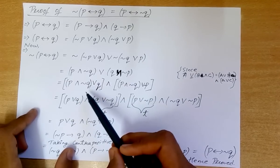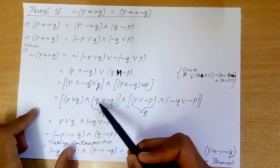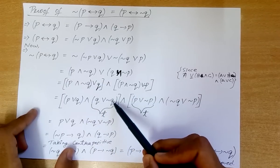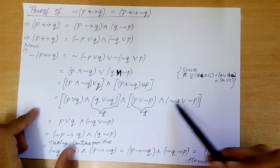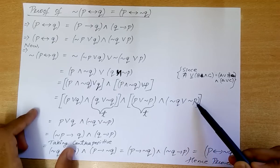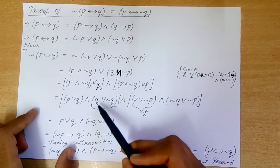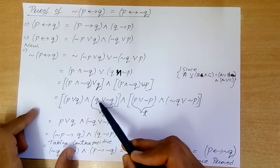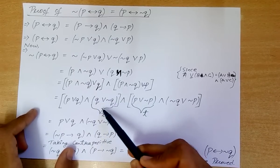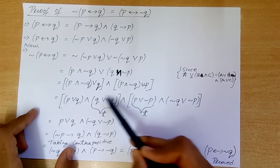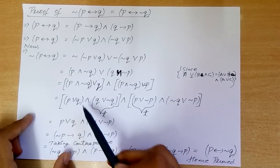Applying the same thing again, we get (P or Q) and (Q or negation of Q) and (P or negation of P) and (negation of P or negation of Q) and negation of P. We know that Q or negation of Q is always true — this is a tautology.